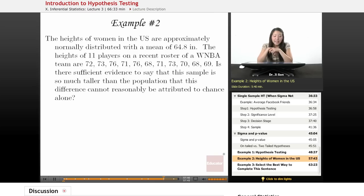Now let's do example two. The heights of women in the United States are approximately normally distributed with a mean of 64.8 inches. The heights of 11 players on a recent roster of the WNBA team are these, in inches. Is there sufficient evidence to say that this sample is so much taller than the population that this difference cannot reasonably be attributed to chance alone?